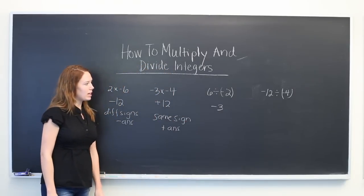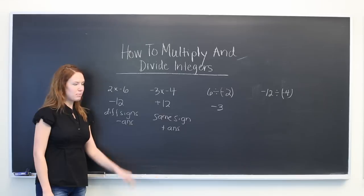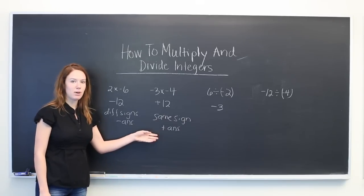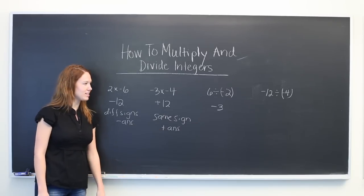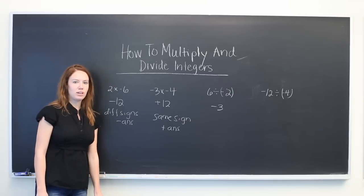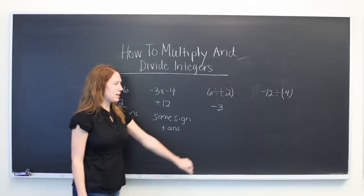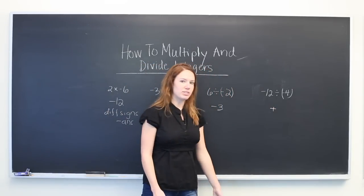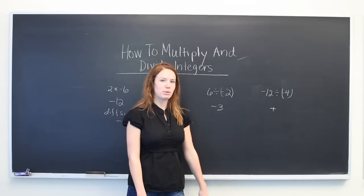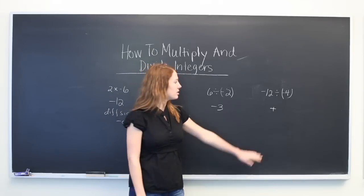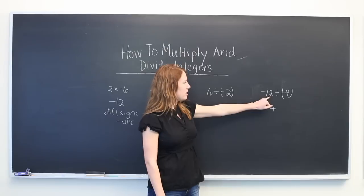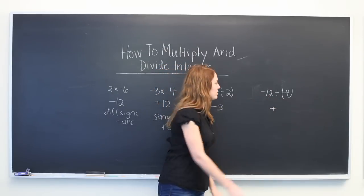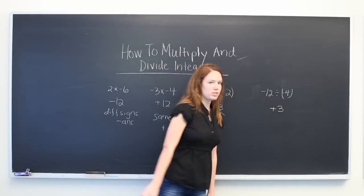Now we have a case where both of the signs are the same and our answer will be a positive answer. So minus 12 divided by minus 4. We know the answer will be positive and then we just think of the two numbers as if they were both whole positive numbers and say 12 divided by 4, which is 3.